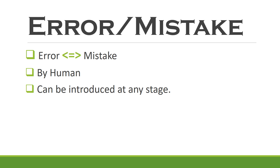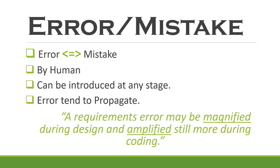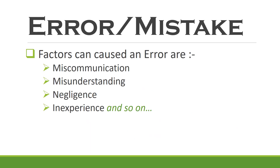Let's start with our first term: error. An error is nothing but a mistake introduced by a human at any stage of the software development. It has a kind of propagating nature — as long as an error stays in the system, it harms the system more. For example, a requirement error may be magnified during the design phase and amplified still more during the coding phase. There could be various factors which can result in an error, like misunderstanding of the customer requirements, where an analyst introduces an error in the requirement document, and if it gets undetected, it can propagate to the design and coding phase.